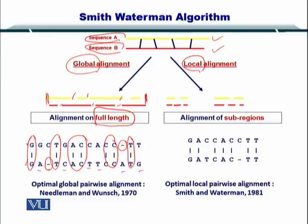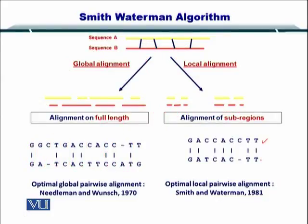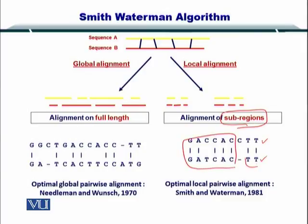In the case of local alignment, what happens is that from the first sequence, we find some portions in the second sequence and align them, while some other portion from sequence A may match to another portion in sequence B. It is not necessary that these portions are in order — one could be on one side of the sequence and another portion may be on the other side in sequence B. You can see the example here: two sequences are aligned and the sub-regions are very nicely aligned.